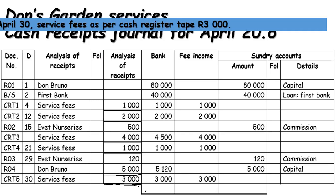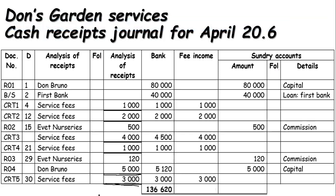After completing all entries we need to find the totals. The bank total at the end of the month is 136,620 rand. Fee income earned in that month is 11,000 rand. Other sources of income — sundry accounts — amount to 125,620 rand. If we add the fee income and sundry totals they must equal the total bank figure. That is how you fill in a cash receipt journal.